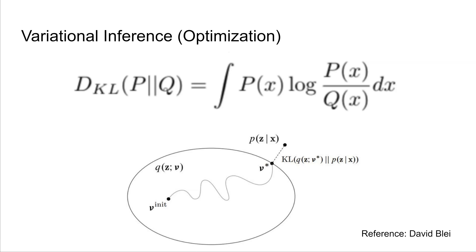We start with an initial guess for the variational distribution, and through optimization we iteratively arrive at better and better approximations. The math for how we perform this optimization is outside the scope of this presentation, but if you are interested, please read the attached PDF where I give a derivation.